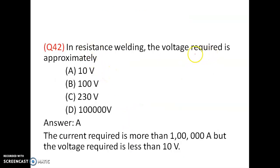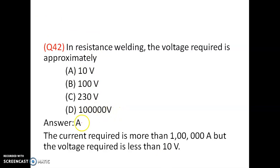In resistance welding, the current required is 10,000 to 1 lakh amps, but the voltage required is less than 10 volts. The voltage required is approximately 10 volts. Option A is correct.